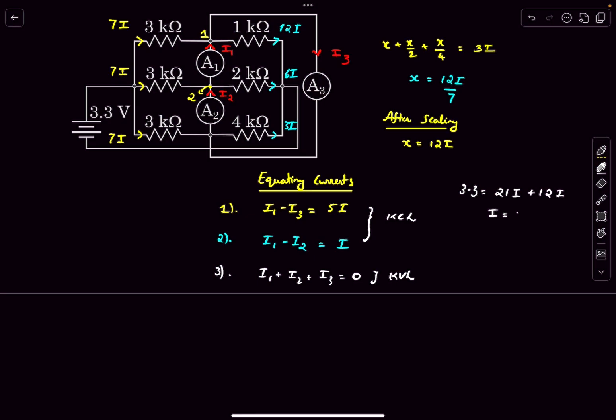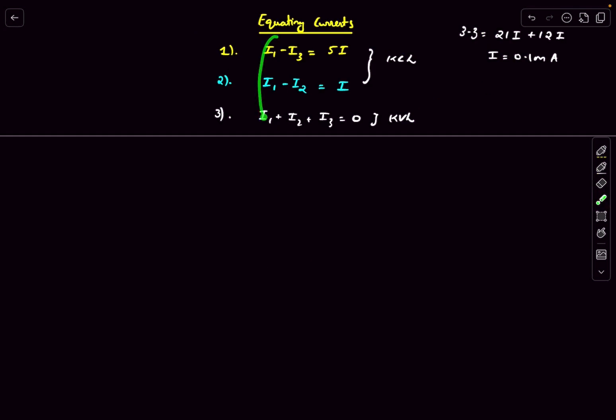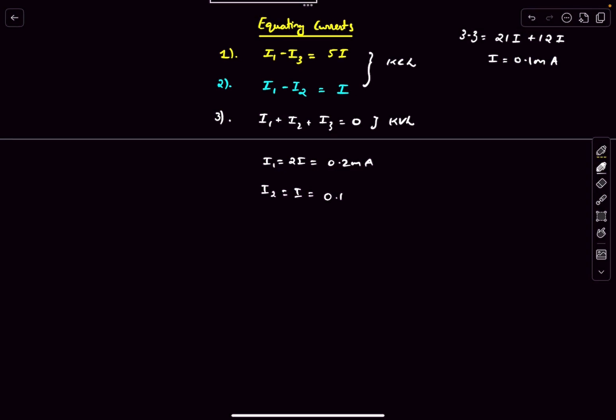So now we can add these three equations together. So the i2 and i3 cancel out and we get 3i1 on the left side and 6i on the right side. So i1 becomes 2i which is 0.2 milliampere, and i2 becomes i which is 0.1 milliampere, and i3 from the third equation will just be minus 0.3 milliampere.